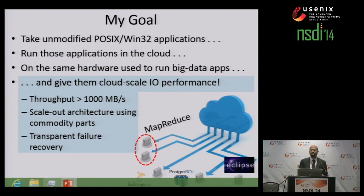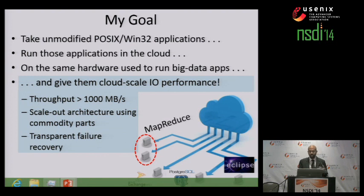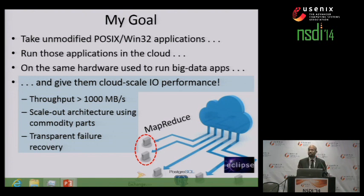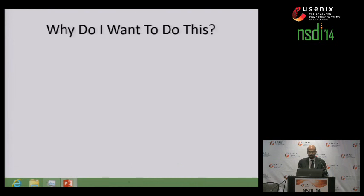I want them to access storage at raw throughputs of 1,000 megabytes per second or more. I want the remote storage for those applications to scale out using commodity parts just like it does for the rest of the cloud. And I also want those applications to enjoy transparent recovery of failed machines, in the same way that big data applications enjoy transparent failure recovery.